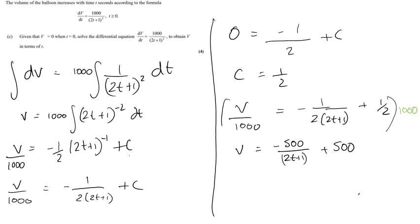To summarise differential equations: split variables to either side depending on what you're integrating with respect to. Once integrated, use the given initial conditions (one variable equal to something) to find the constant c. Then you have your complete equation.